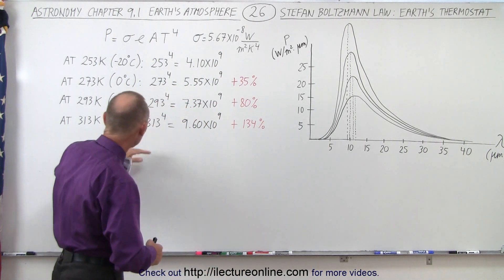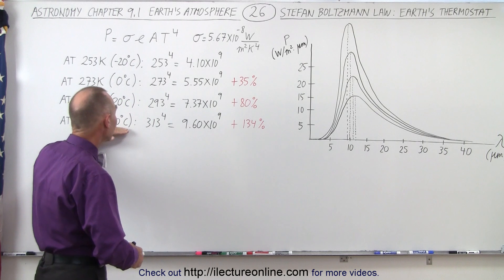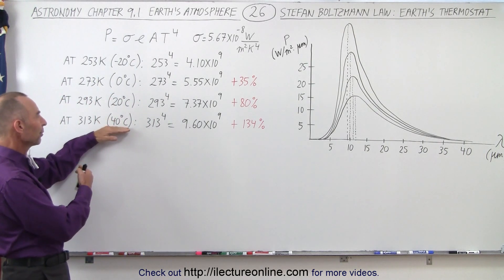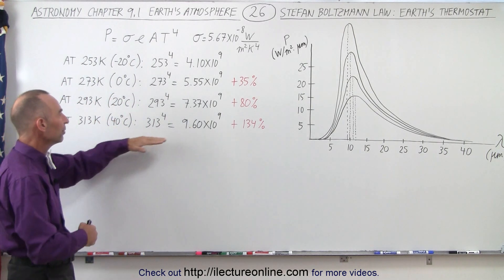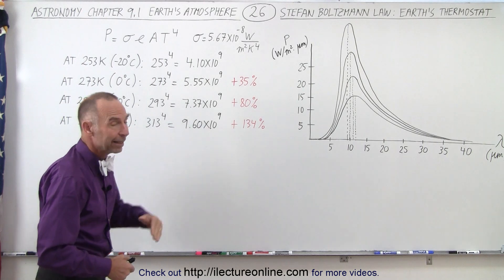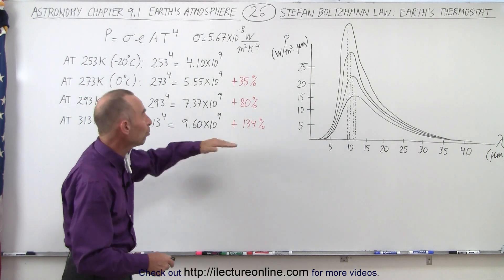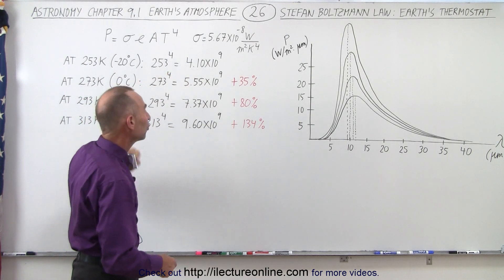And a hot day like in the desert during the summer at 40 degrees centigrade, get out of the way here, 40 degrees centigrade, 313 Kelvin, the amount of energy radiated is now well over 100 percent more than it was at minus 20 degrees centigrade.